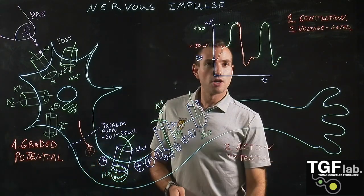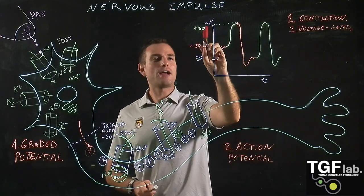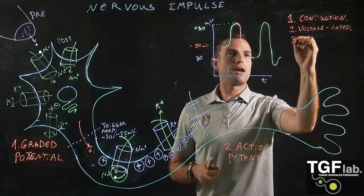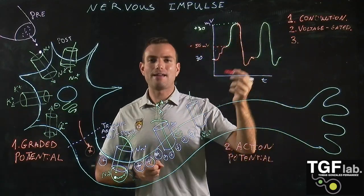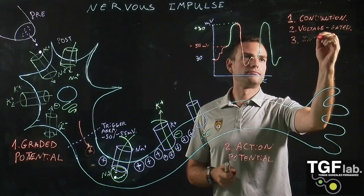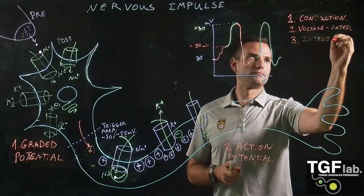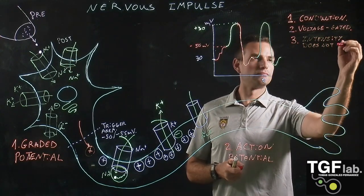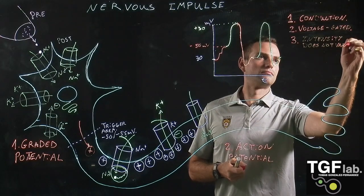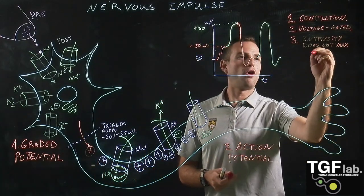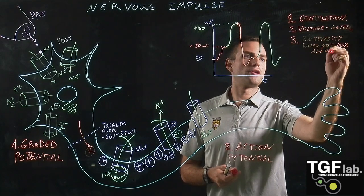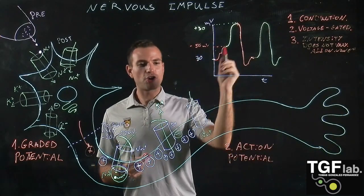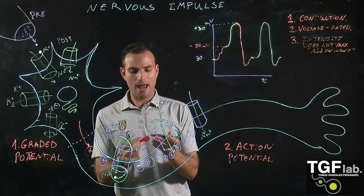As we've seen, the intensity doesn't change — it doesn't vary like in the graded potential. This is the third characteristic: the intensity doesn't change. This is called the all-or-none principle, because we are always going to have a maximum intensity of +30 millivolts.